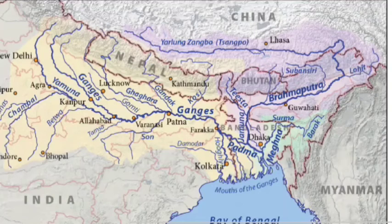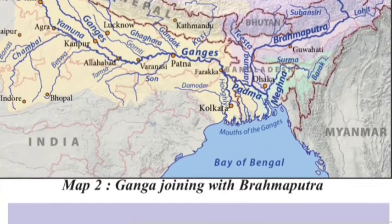The river Ganga flows through Uttarakhand, Uttar Pradesh, Bihar, and West Bengal, and then into Bangladesh. The Ganga river system occupies 2,525 kilometers in length, covering 26.3 percent of the total land area of India.